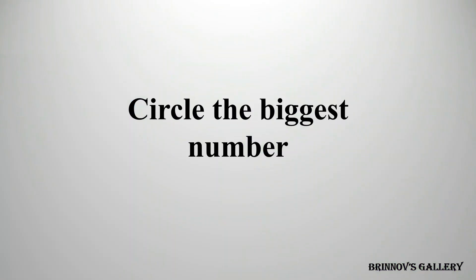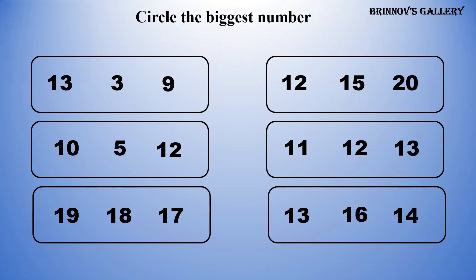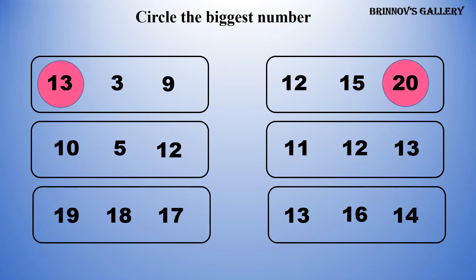Circle the biggest number. 13, 3, 9 — 13 is the biggest number amongst all the others. 12, 15, 20 — 20 is the biggest number amongst all the others. 10, 5, 12 — 12 is the biggest number amongst all the others.